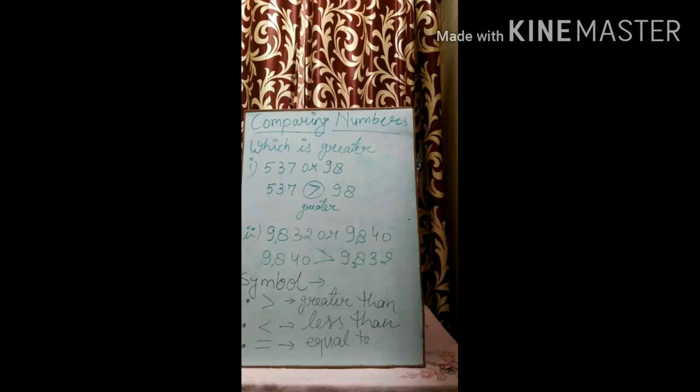In math there are three symbols. This one represents greater than, and this one represents less than, and this one represents equal to. If two numbers are given and asking which is greater.